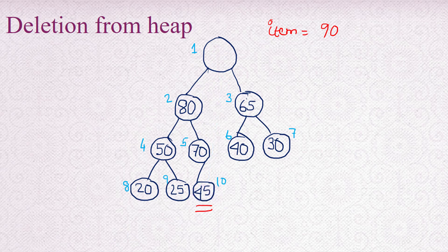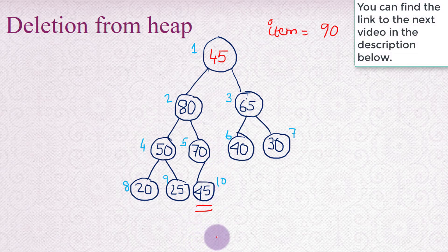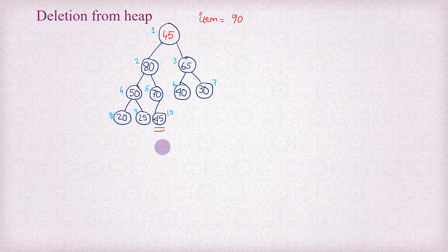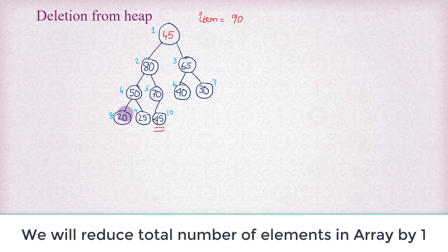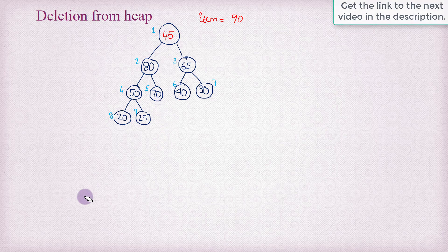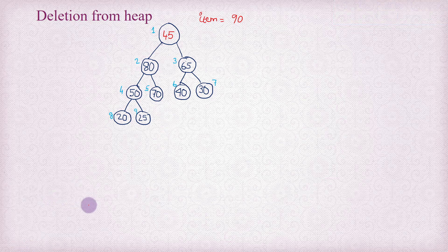We copy the content of the last node into the heap root and then physically delete the last node. It is easier to delete the last node because it's a leaf. Since we practically represent the heap in a one-dimensional array, the last node is the last element of the array. So if we reduce the total number of elements by one, we are practically deleting that last element - just by reducing the total number of elements in the array by one.